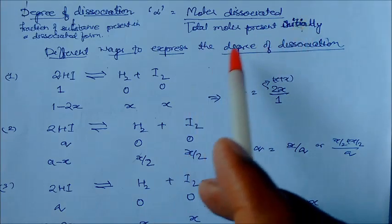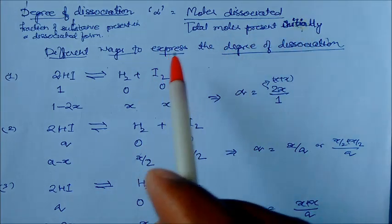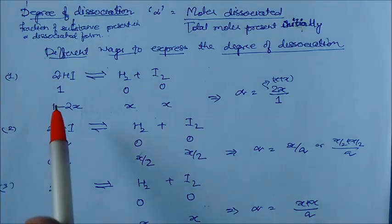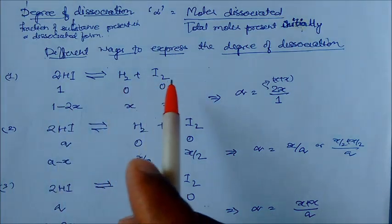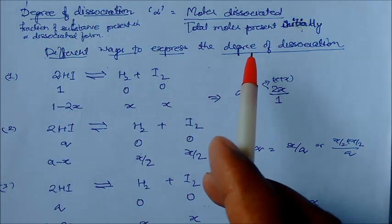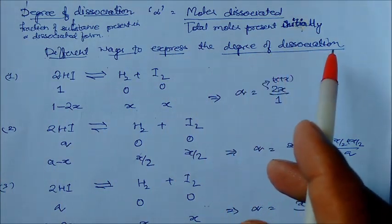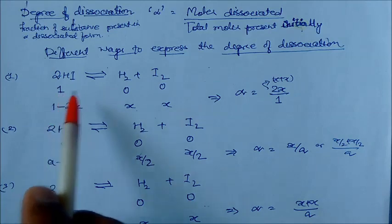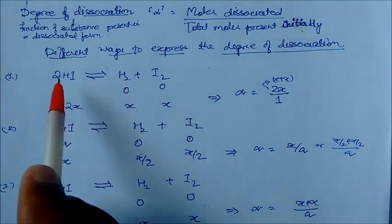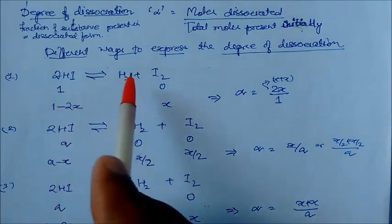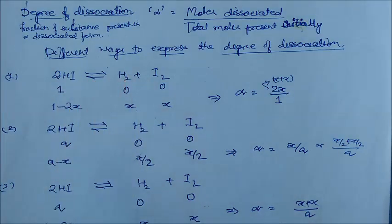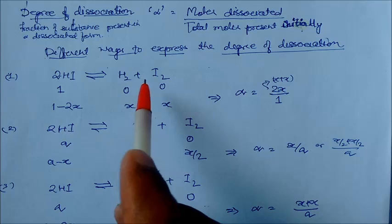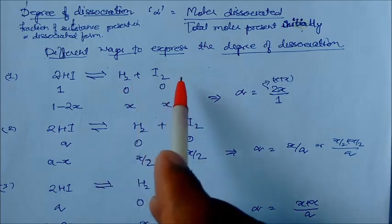Let us see how we can write this expression by seeing examples. There are different ways to express the degree of dissociation. Here is one equation: 2HI — this is a homogeneous gas phase chemical reaction.